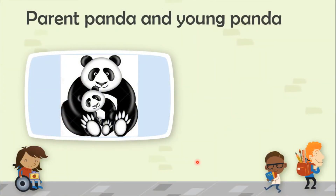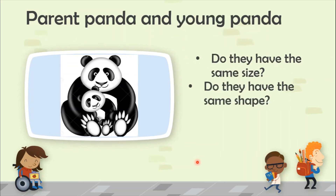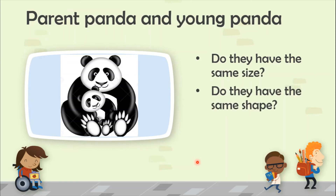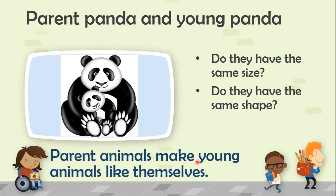Look at the parent panda and young panda. They do not have the same size because one is big and one is small, but they do have the same shape. Parent animals make young animals like themselves — one is parent and one is offspring.